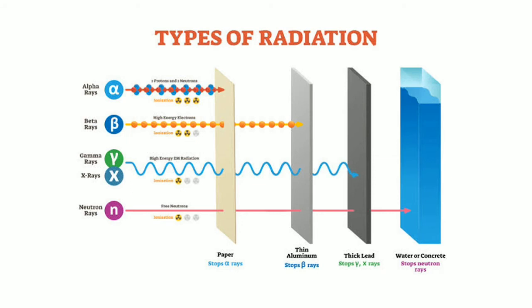This illustration shows the types of ionizing radiation and how the particles penetrate different substances. Alpha rays, with their two protons and two neutrons, are stopped at the first surface — a sheet of paper. Beta rays, with their high-energy electrons, can penetrate until stopped by thin aluminum. Gamma rays and X-rays, with their high-energy electromagnetic radiation, require thick lead shielding to be stopped. Neutron rays, with their free neutrons, can penetrate until stopped by water or concrete.